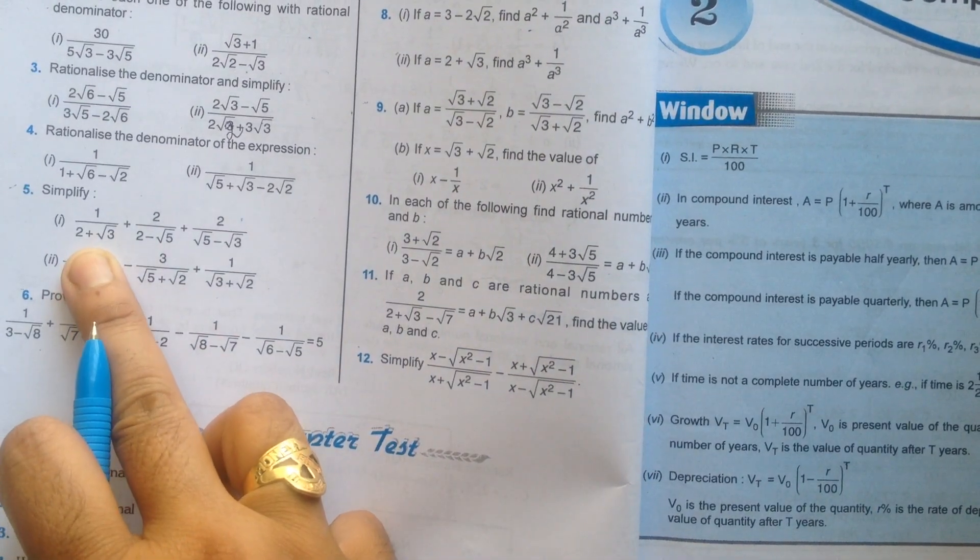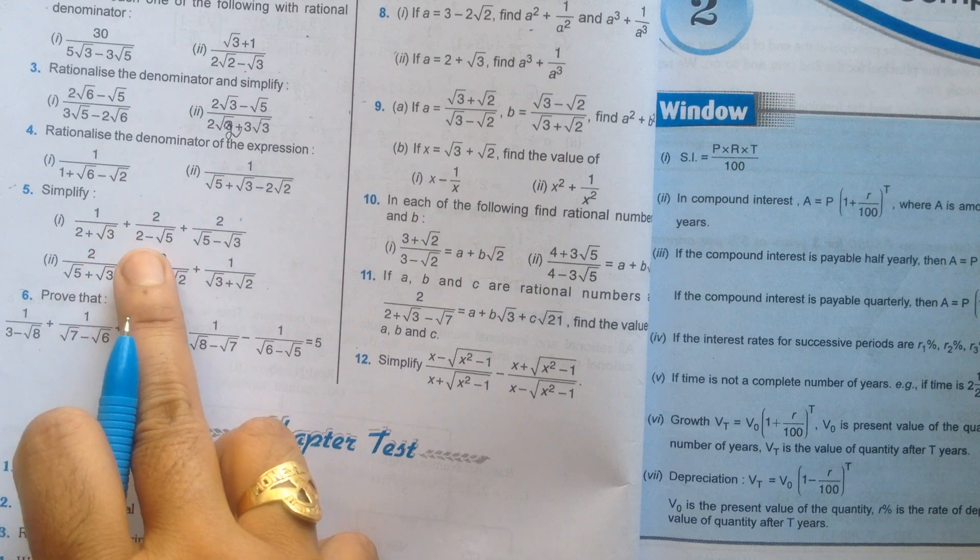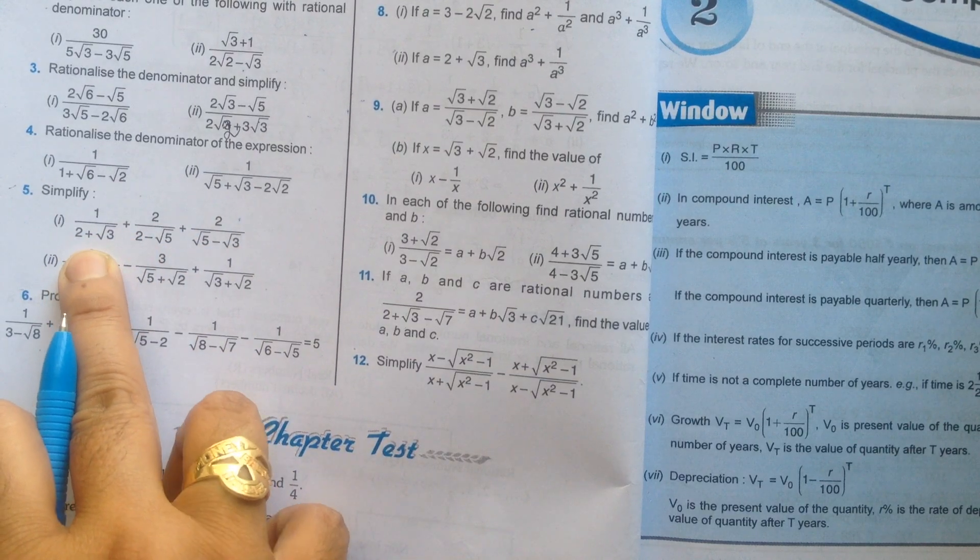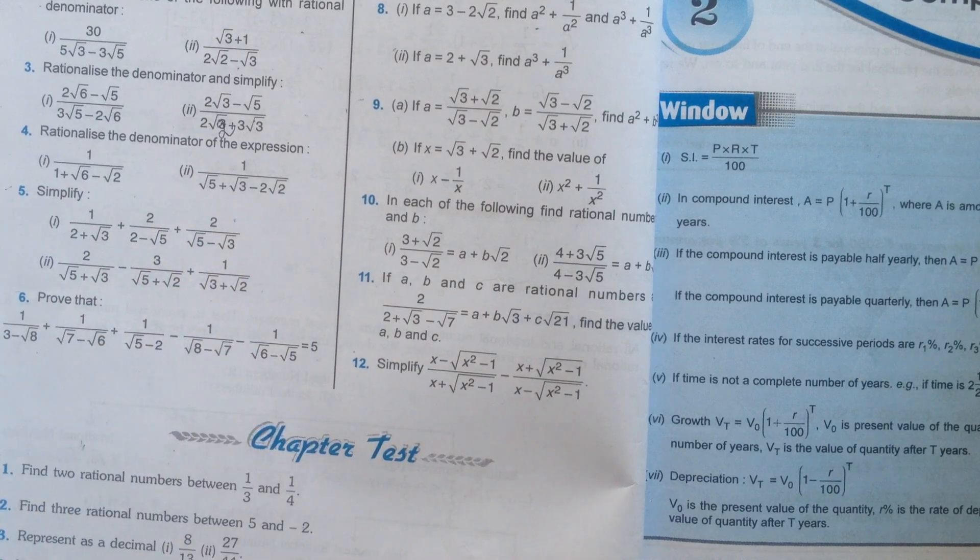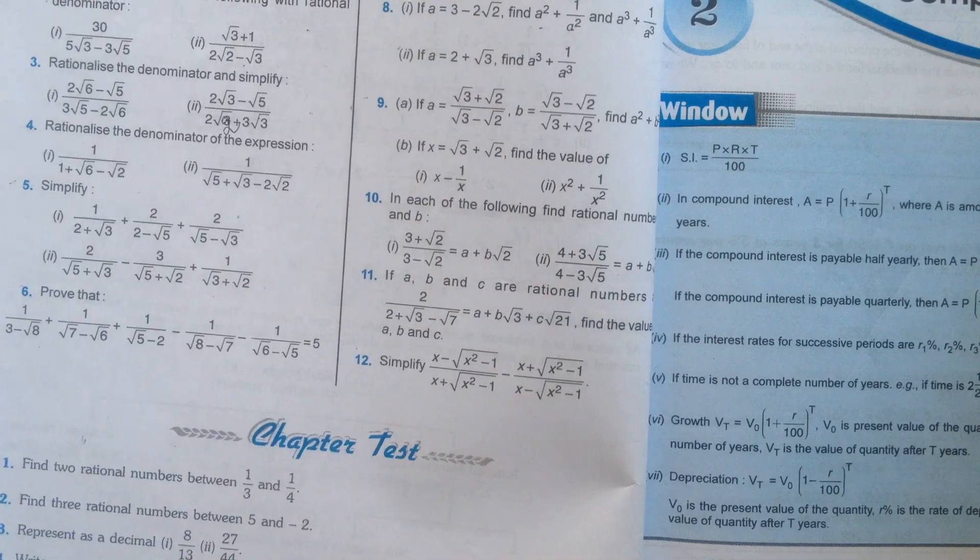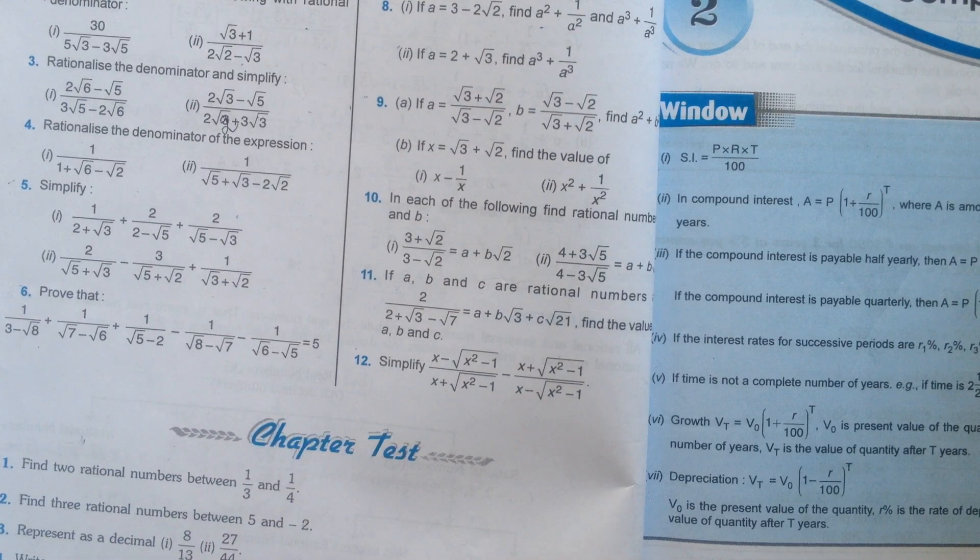Question number 5, simplify. You can find them separately also. Like take the rationalization of this term separately, this one separately, this one separately. Then add all three. You can do it like that. That is your own wish. So that's all about chapter number 1. Thank you and have a nice day.